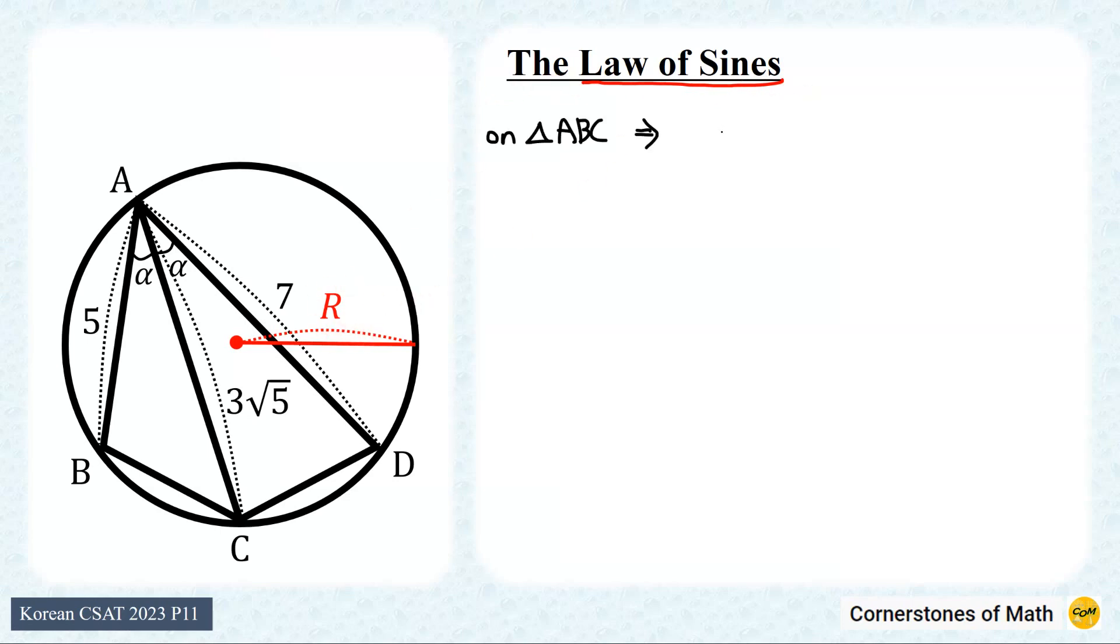From triangle ABC, the law of sines gives length of BC over sine alpha equals 2R. Similarly, now from triangle ACD, applying the law of sines at angle alpha gives length of CD over sine alpha equals 2R. Here, we have the same radius R, because triangles ABC and ACD are inscribed in the same circle.